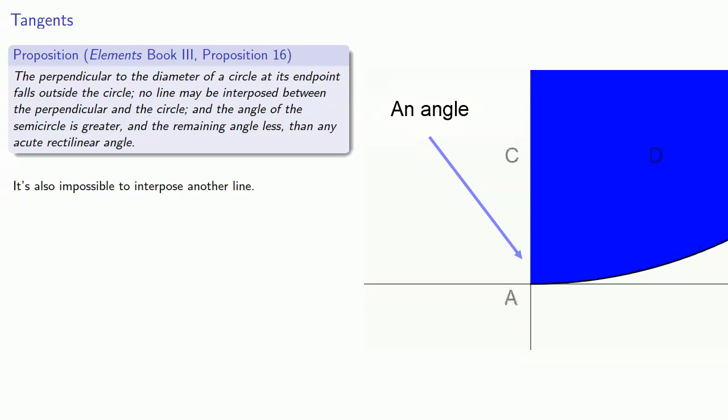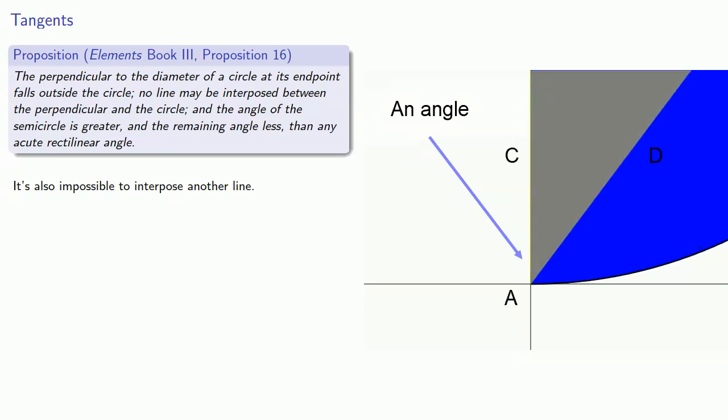First, it's going to contain any acute angle CAD. And since the whole is greater than the part, that means the angle of a semicircle is greater.